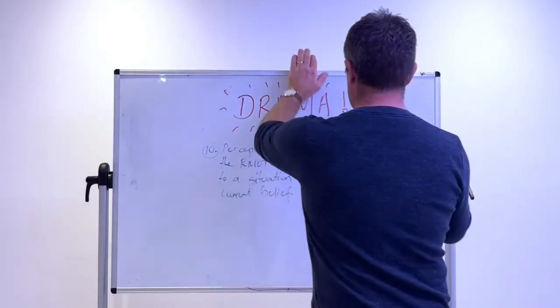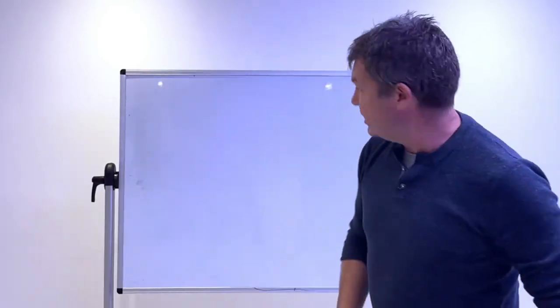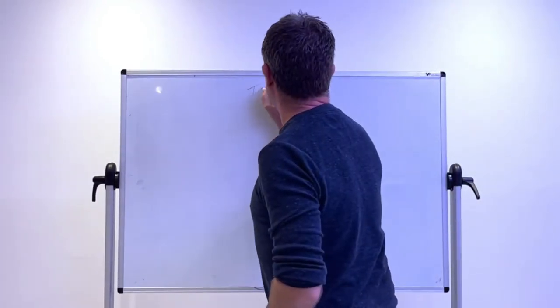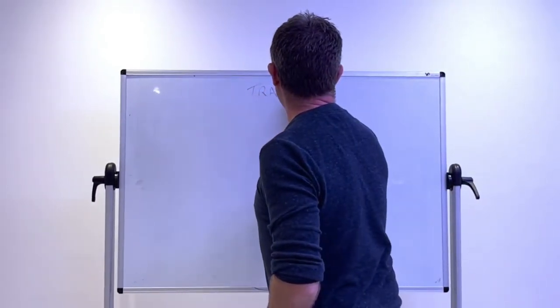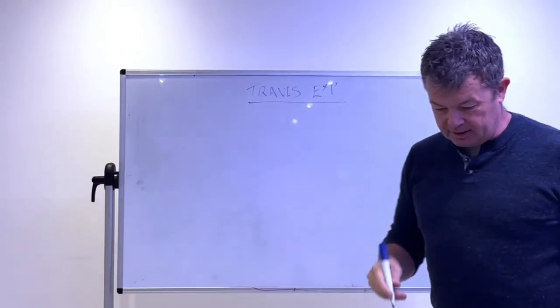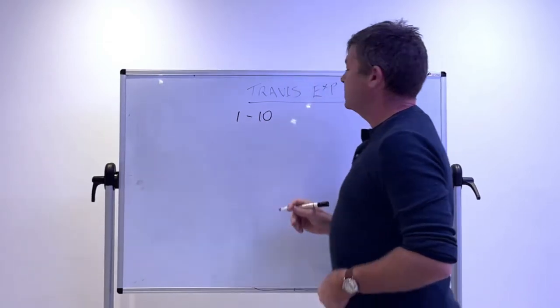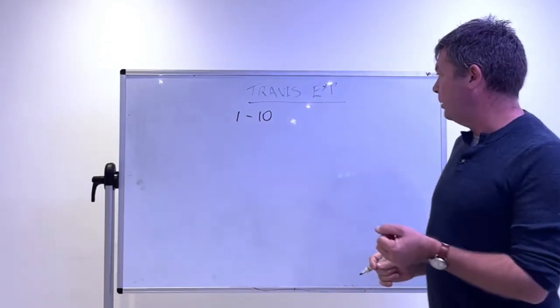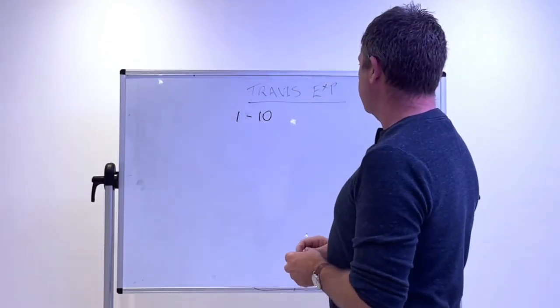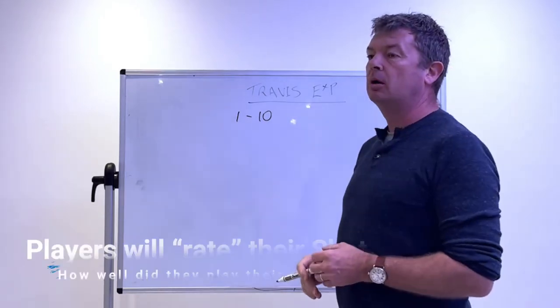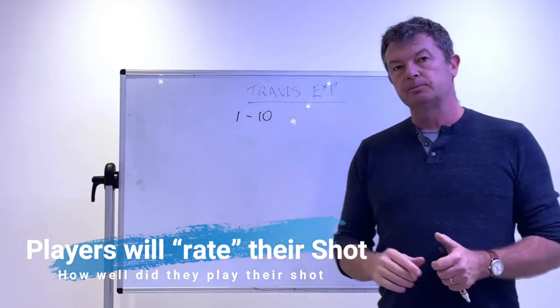Let's have a quick look at this in action. An experiment we run, we call it the Travis experiment. I've done this one consistently. What is it? So we'll get a player to score. They're playing a point, the player will call out a score for their own shot somewhere between one and 10.